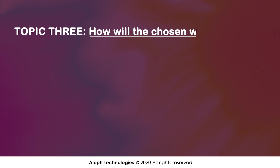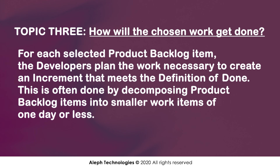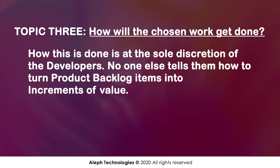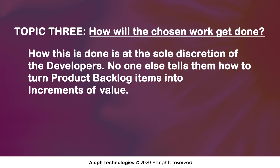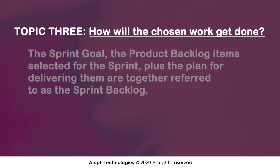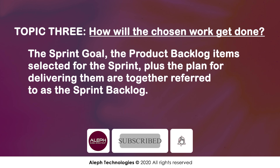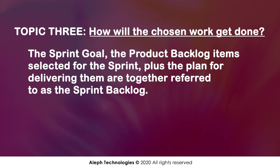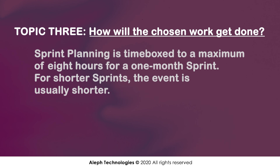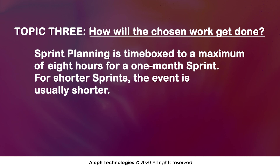Topic 3: How will the chosen work get done? For each selected product backlog item, the developers plan the work necessary to create an increment that meets the definition of done. This is often done by decomposing product backlog items into smaller work items of one day or less. How this is done is at the sole discretion of the developers. No one else tells them how to turn product backlog items into increments of value. The sprint goal, the product backlog items selected for the sprint, plus the plan for delivering them are together referred to as the sprint backlog. Sprint planning is time boxed to a maximum of eight hours for a one month sprint. For shorter sprints, the event is usually shorter.